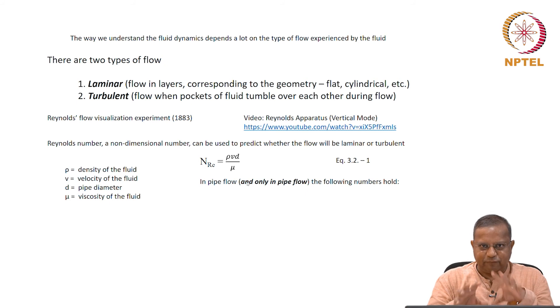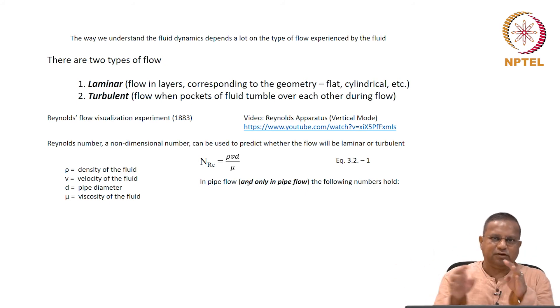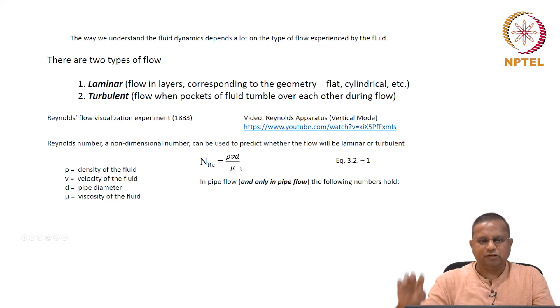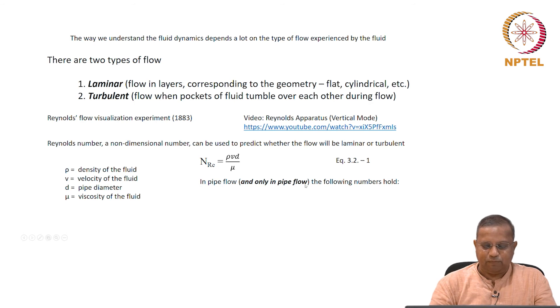If we look at pipe flow, this transition Reynolds number is there for all geometries, all flows, all flow situations. If we focus on pipe flow alone, then there are some numbers that you can put to this which are good to remember. For other situations the numbers are different. In pipe flow, and only in pipe flow, the following numbers hold.